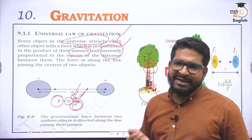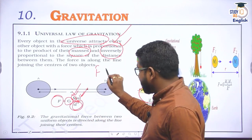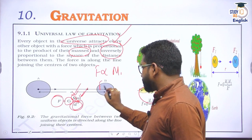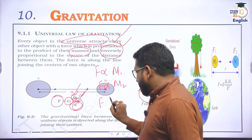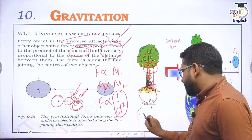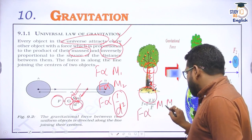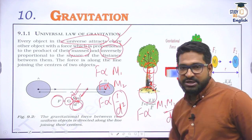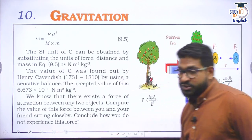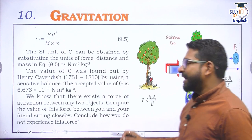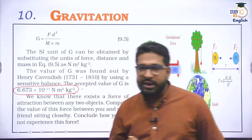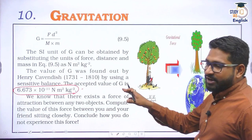If you calculate the gravitational force between sun and earth, it would be mass of sun multiplied by mass of earth divided by the square of the distance between earth and sun. G is basically a constant. Newton established that gravitational force between two bodies is directly proportional to the masses M1 and M2, and inversely proportional to the square of the distance between them. Removing the proportionality sign gives you the gravitational constant G, which was calculated by Henry Cavendish as 6.673 × 10⁻¹¹ Newton meter squared per kg squared.